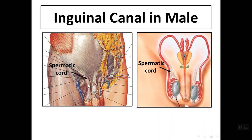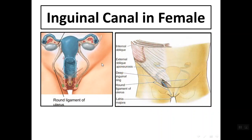In males, the inguinal canal allows passage of the structures of the spermatic cord to the testes from the abdomen. In females, it allows passage of the round ligament of the uterus — this is the uterus, and this is the round ligament — passing through the inguinal canal to the labia majora.